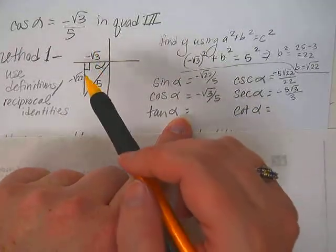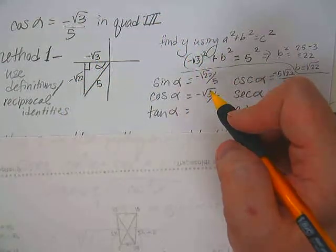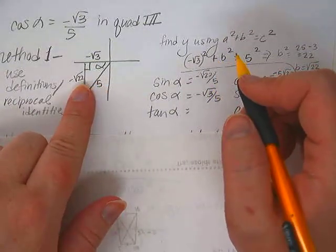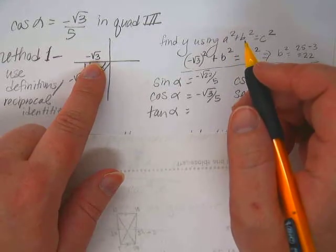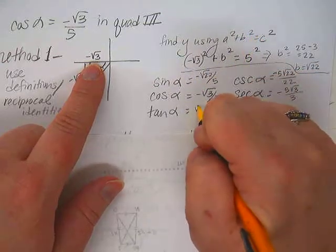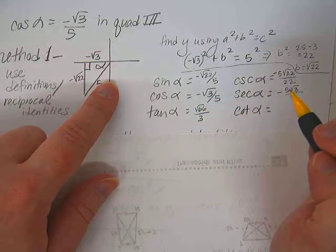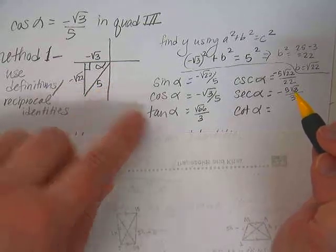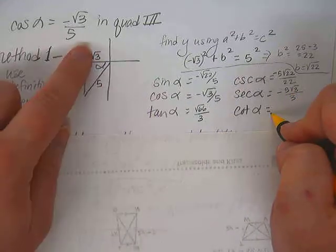And then tangent is opposite over adjacent, so negative square root of 22 over negative square root of 3 gives us a positive answer. So positive square root of 22 over positive square root of 3, right? But then we would need to rationalize that, so multiply the top and the bottom by the square root of 3. Wouldn't that give us the square root of 66 over 3? Do you hear how I did that? Does that make sense, and is that correct?